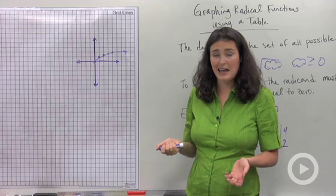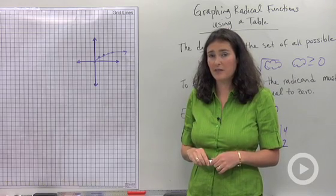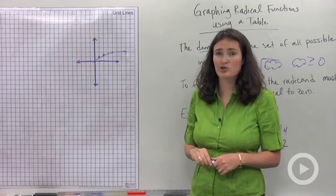Use the domain to tell you what x numbers are possible. That is, take the radicand, set it greater than or equal to zero, and then solve for x in order to find what x numbers should go into your table.